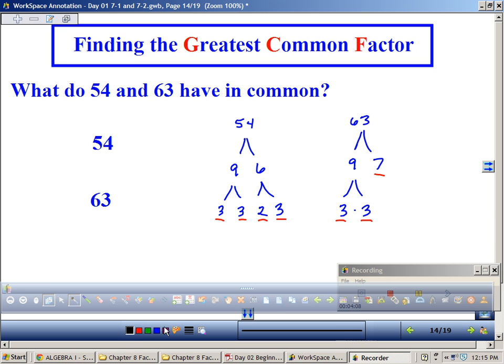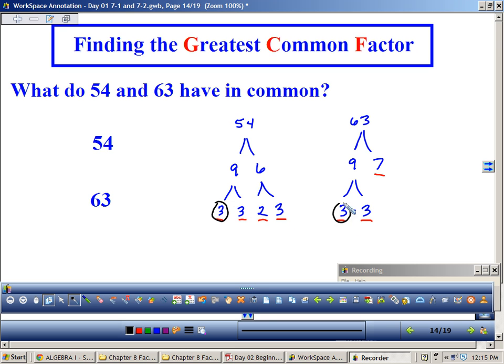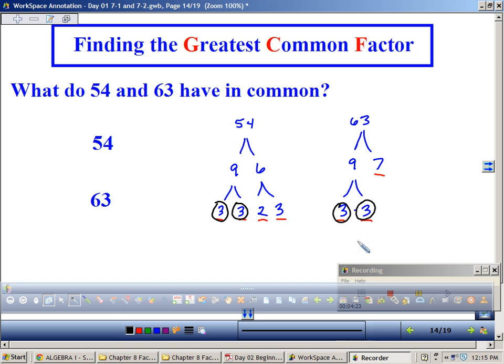So what are my common factors? 3. There's a 3 that they have in common. What else? No, they also have another 3 in common, right? You put both 3s. So the greatest common factor of 54 and 63 is 9. Okay. You see where I got 9? I don't just have... They don't have one 3 in common. They have two 3s in common. So 2 threes would make 9. Questions on this so far?